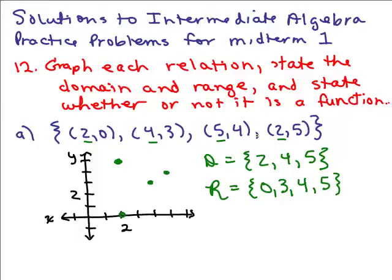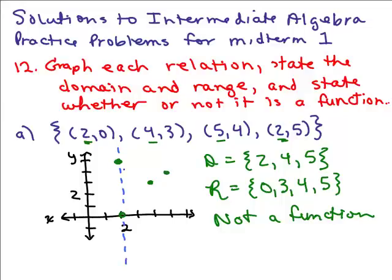Is this a function? If there are two ordered pairs that have the same x value, it's not a function. Here, x = 2 appears both times. So this is not a function, because a function requires each x value to have only one y value. Also, it doesn't pass the vertical line test — there are two places where the same x value has a different y value.